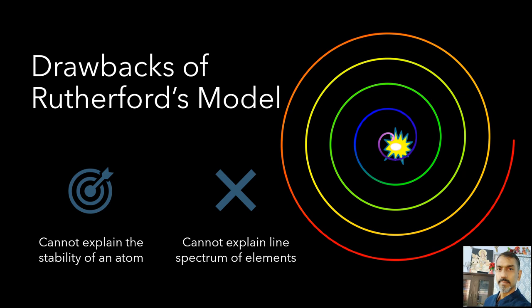Also, according to this model, an electron can revolve in any orbit. According to electromagnetic theory, it must emit radiations of all frequencies or wavelengths. Hence it should emit continuous spectrum. Actually, the elements are found to emit spectral lines of definite frequencies and not all of them.